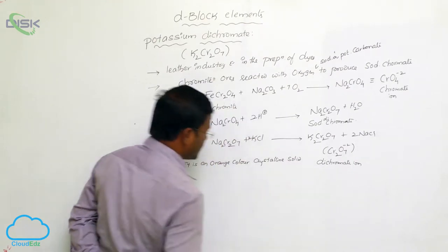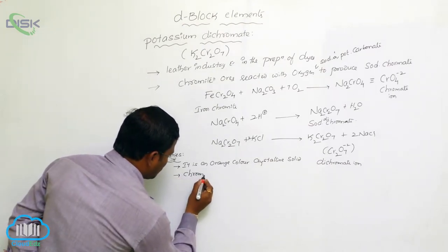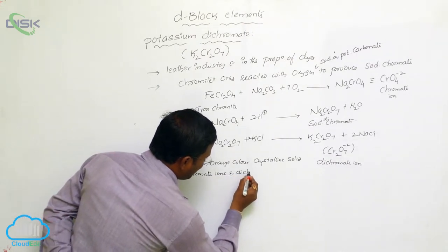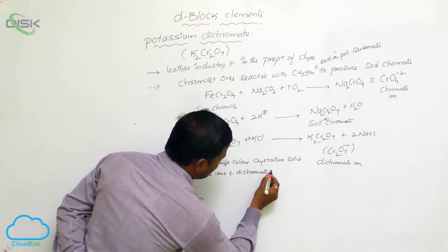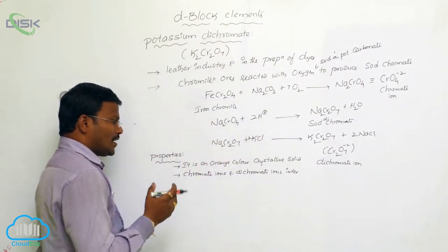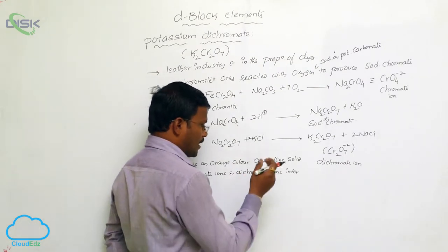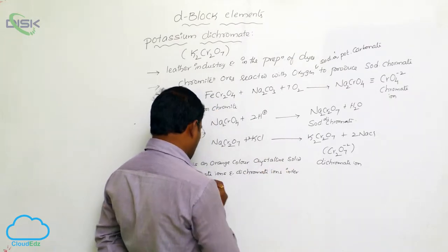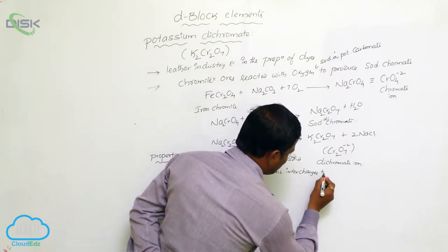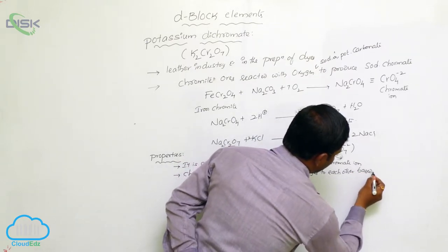Potassium dichromate is an orange color crystalline solid. Chromate ions and dichromate ions interchange with each other in aqueous medium based on the pH condition.